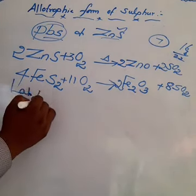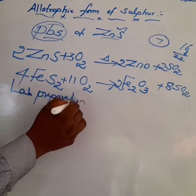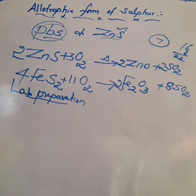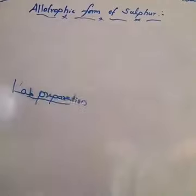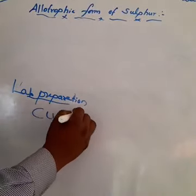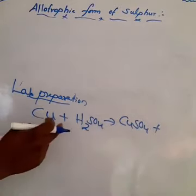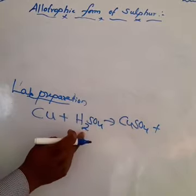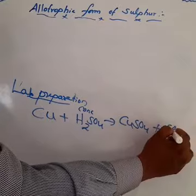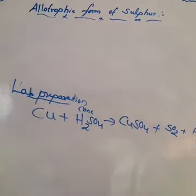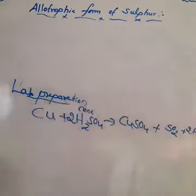Laboratory preparation of sulfur dioxide: copper reacts with concentrated sulfuric acid. Cu + 2H2SO4(conc.) → CuSO4 + SO2 + 2H2O. To balance: product side has 2 sulfur so make 2H2SO4 on the reactant side; 2 water molecules on the product side balances the equation.